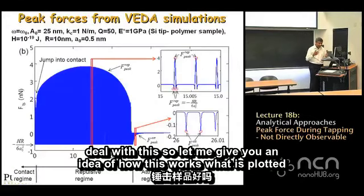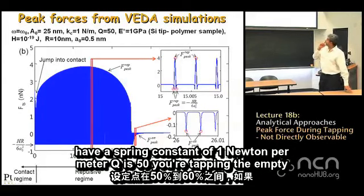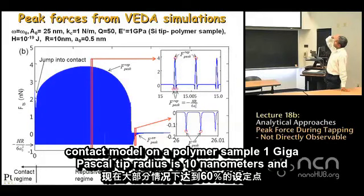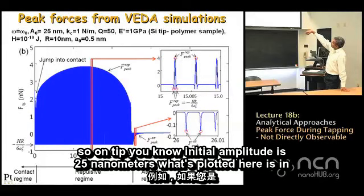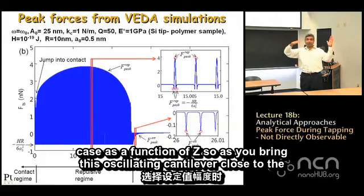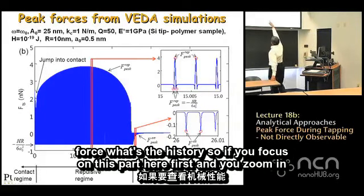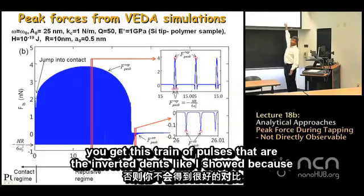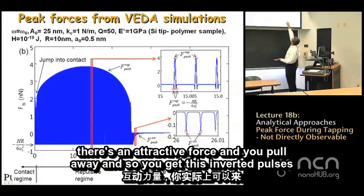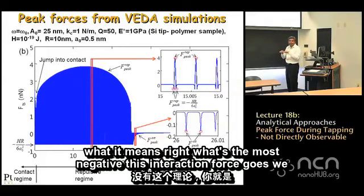A simulation was done in beta with parameters: spring constant of 1 N/m, Q of 50, DMT contact model on a polymer sample of 1 GPa, tip radius 10 nm, initial amplitude 25 nm. What's plotted is the history of tip-sample interaction force as a function of z as you bring the oscillating cantilever close to the surface. Focusing on the region far from the surface, you get a train of inverted pulses because you're in the attractive regime — we call this F attractive peak.